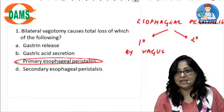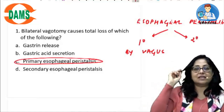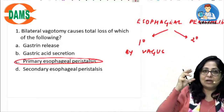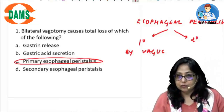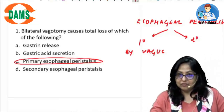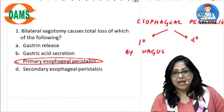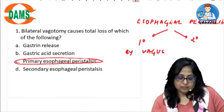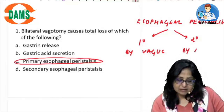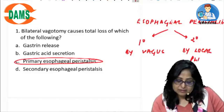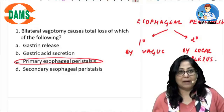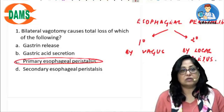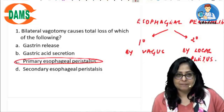Secondary esophageal peristalsis occurs when the primary fails to move the food forward — if primary fails, secondary will take over. Secondary esophageal peristalsis is mediated by the local plexus, by the local neurons. Primary is by the vagus. Therefore, a bilateral vagotomy will cause loss of primary esophageal peristalsis.